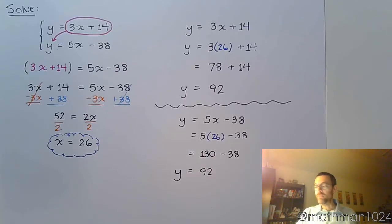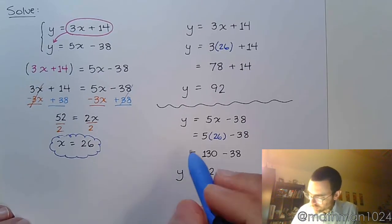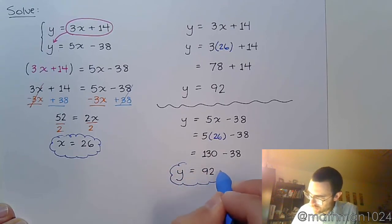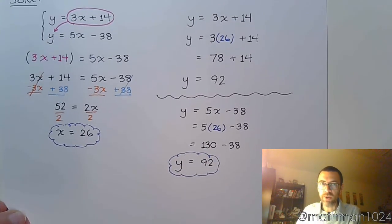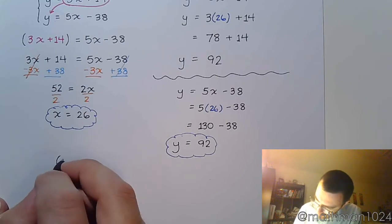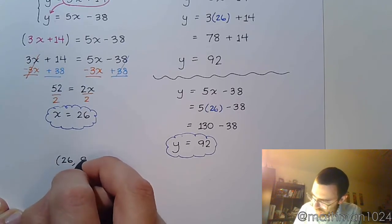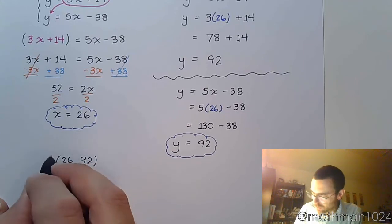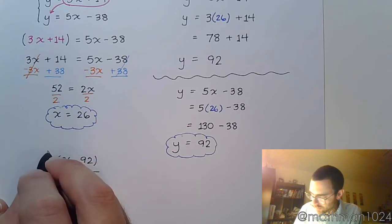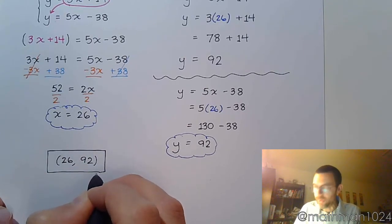We're able to verify that 92 is going to come out for y no matter which equation we plug the 26 into. And so that means that our solution is going to be the ordered pair 26, 92.